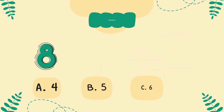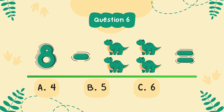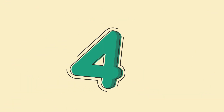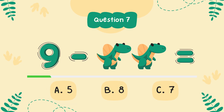What is 8 minus 4? That's 4. What is 9 minus 2? Yes, you are right. It's 7.